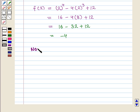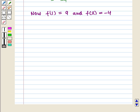Now we have got the value of f(1) as 9 and f(2) as -4. We can see that there is a sign change between f(1) and f(2).